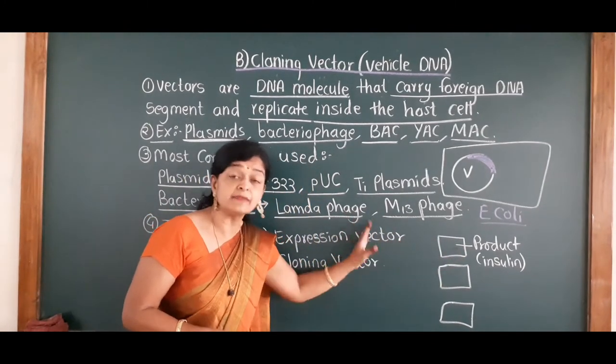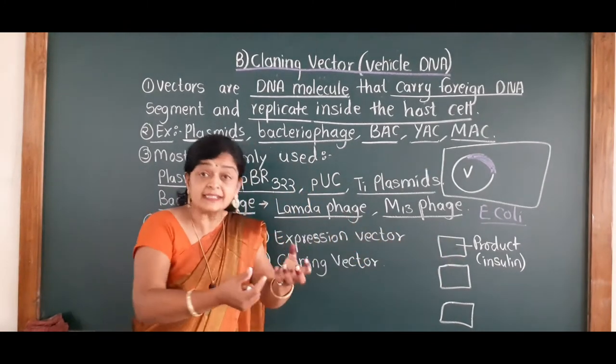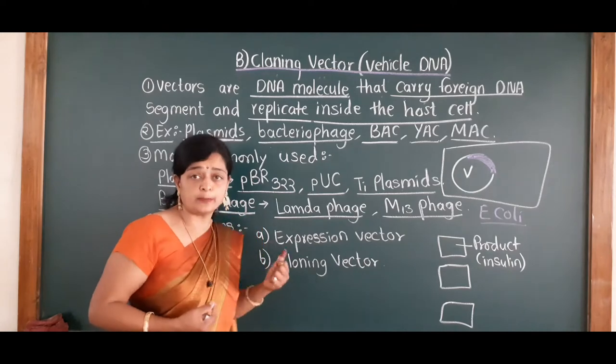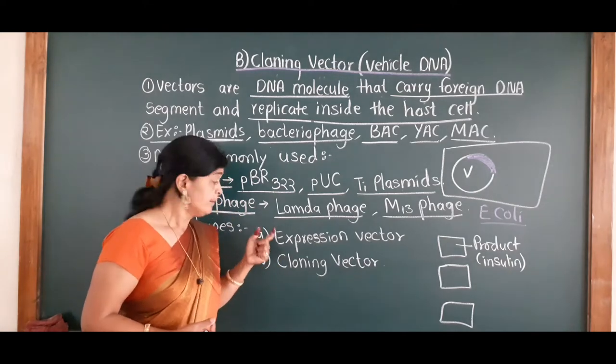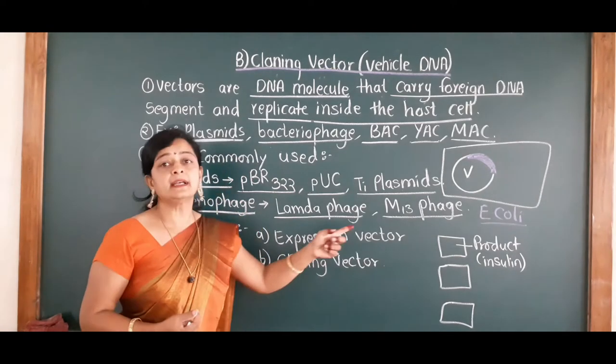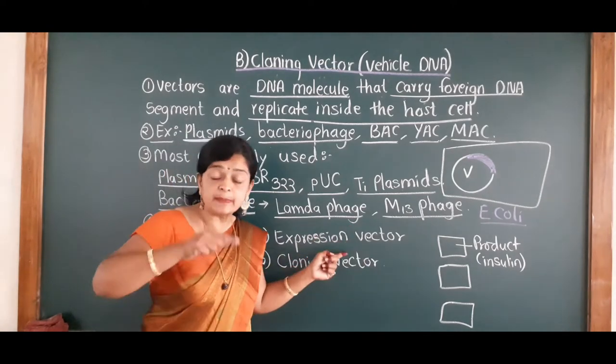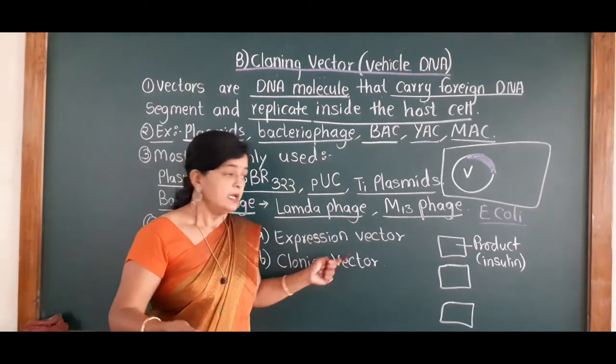Expression vector means when we collect a sub-product from this vector — like insulin, antibodies, or vaccines — that type of vector is called an expression vector.